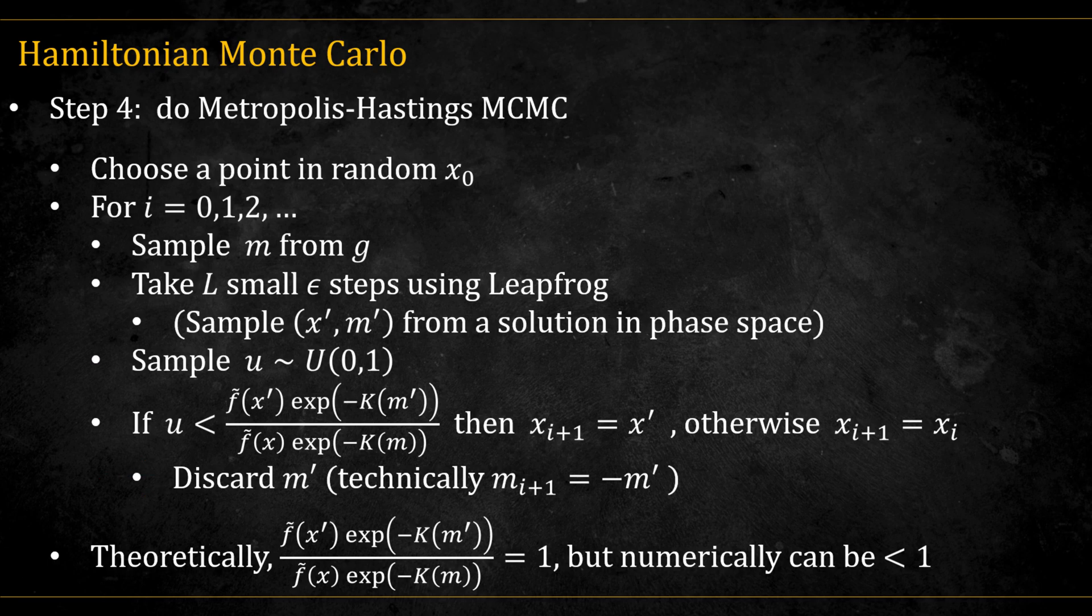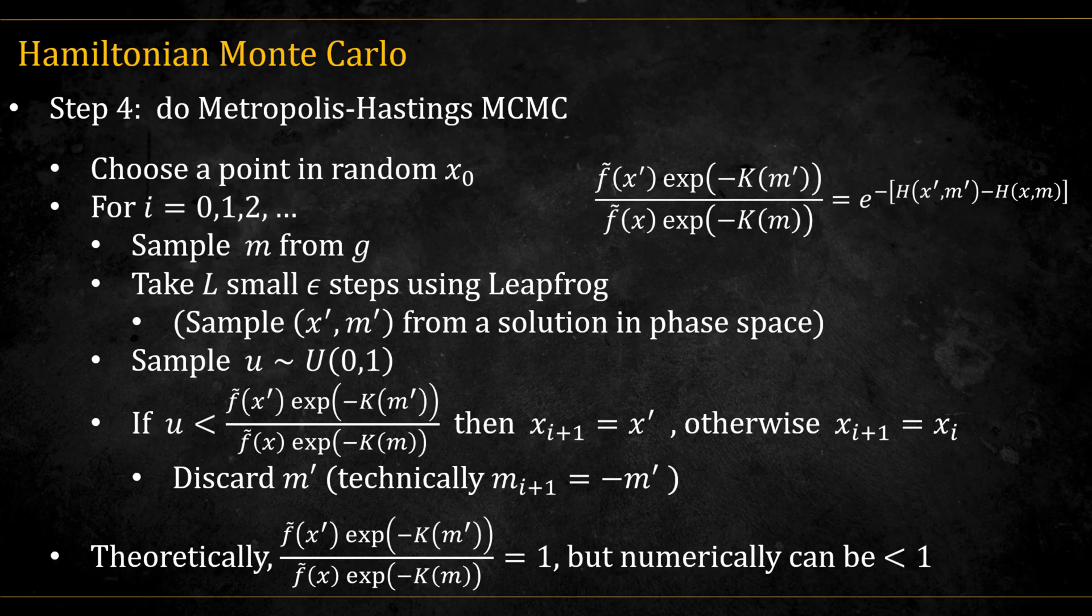Now, in theory, because the leapfrog steps move us along a trajectory of constant energy, the new point should have exactly the same energy, and therefore the same probability, as the old point. That would mean the acceptance ratio is always 1, so every proposal gets accepted. In practice, however, numerical errors accumulate, and the energy may drift slightly. This is why we still compute the ratio and compare it against U. Notice that the acceptance ratio is equal to the unnormalized Boltzmann distribution of the difference in energy levels.